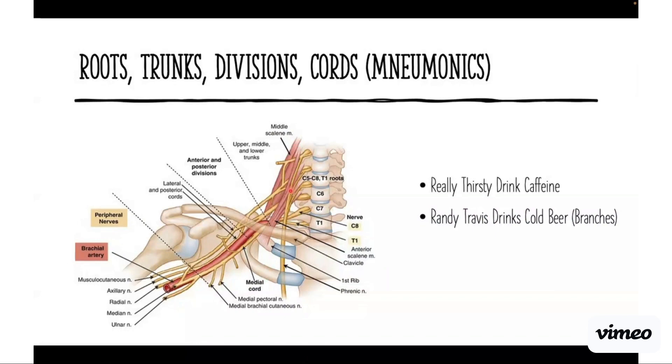For the country music aficionados out there, you know cold beers and lots of country music, so this works out well with Randy Travis. One of our feature muscles, the scalenes—you have the anterior and middle scalenes where the brachial plexus passes through. As it's passing through the scalenes, it's your roots, and by the time it comes out, it's converged into the trunks.